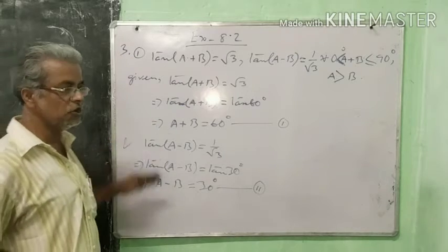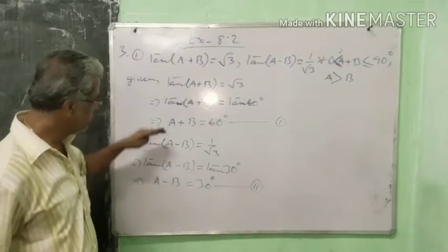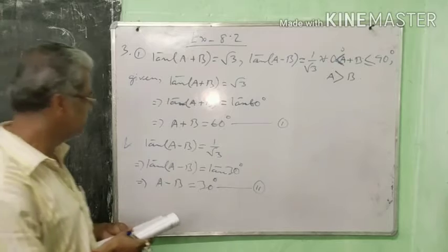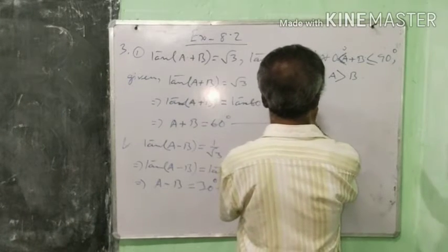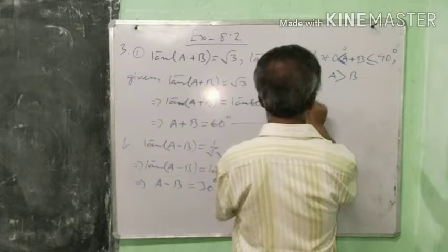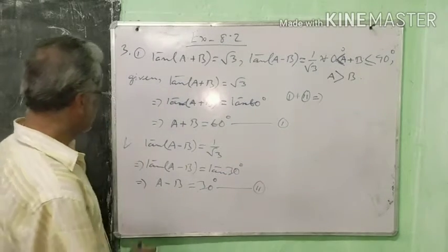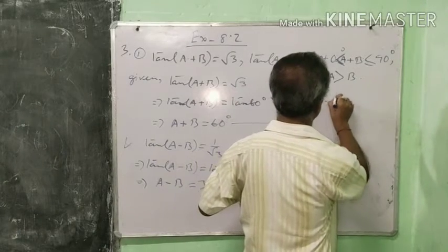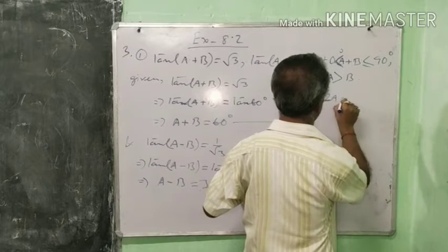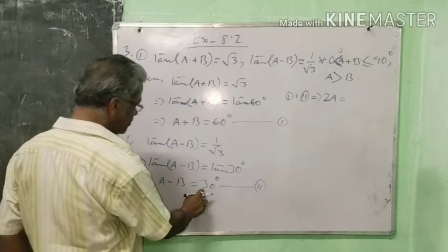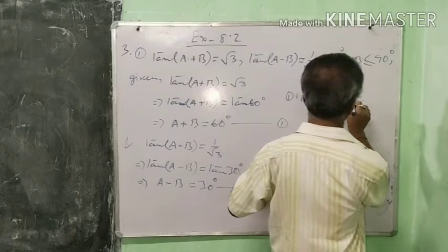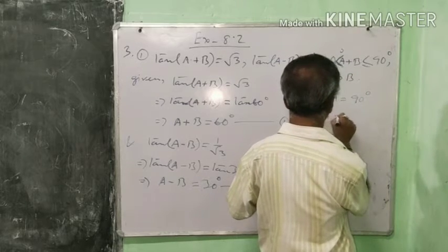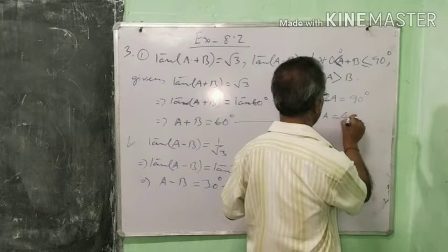Now you know how to solve linear simultaneous equations. These two are nothing but linear simultaneous equations. From equation 1 and 2, if we add them: A+B plus A−B gives 2A, and 60 degrees plus 30 degrees is 90 degrees. So A equals 90 divided by 2, that is 45 degrees.